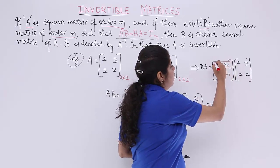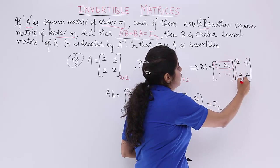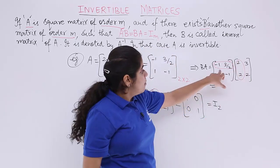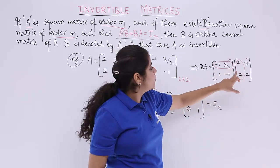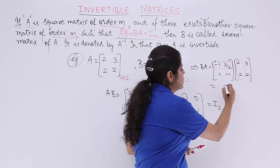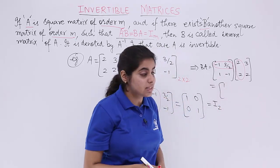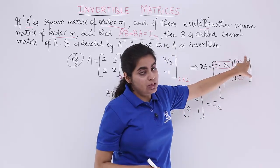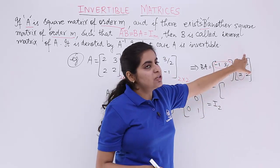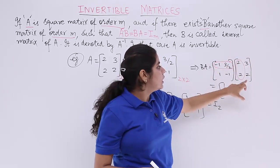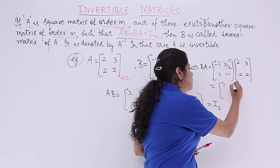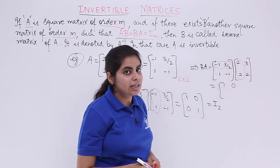First row, first column, first row, second column, first row, first column. Let's do it together. Minus 1 into 2, minus 2, 3 by 2 into 2, 3. So plus 3 minus 2 is 1. Next, minus 1 into 3 because we are going from first row, second column. Minus 1 into 3 is minus 3, 3 by 2 into 2 is 3. So it is minus 3 plus 3 which is 0.